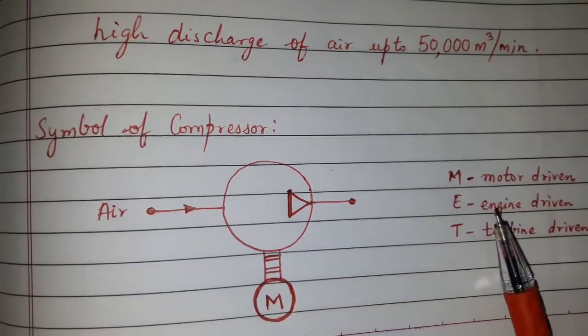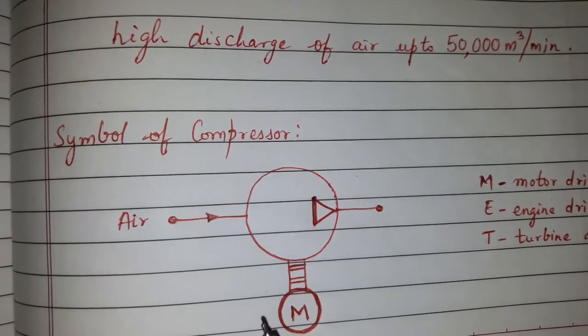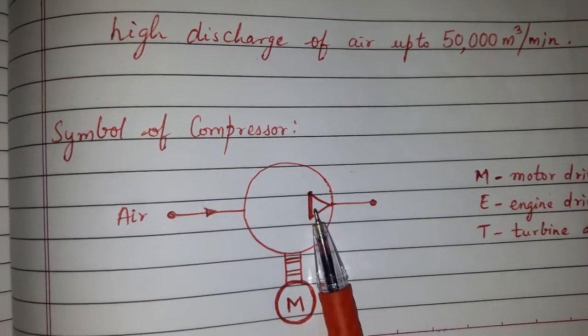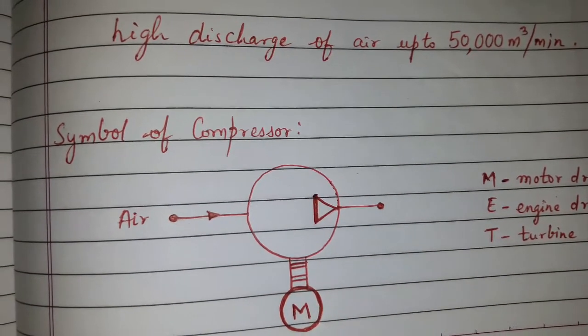E when it is engine driven, T when it is turbine driven. And this triangle which is empty indicates that it is handling air.